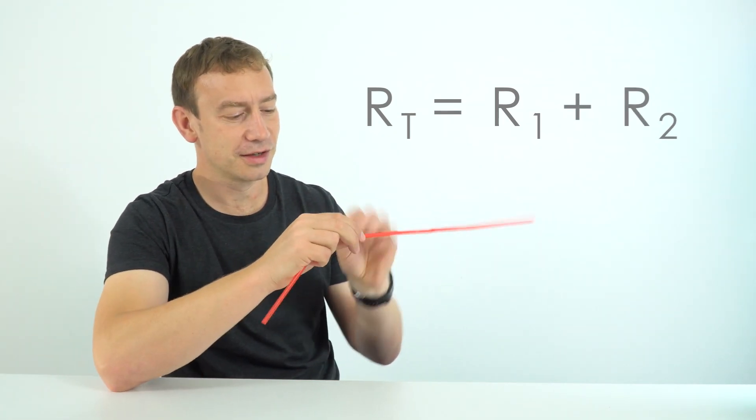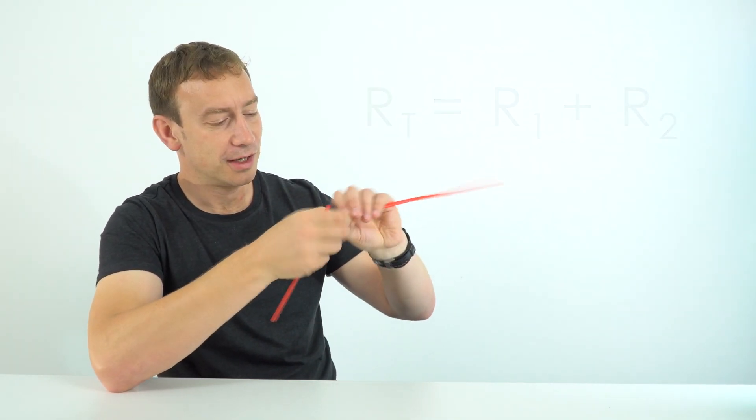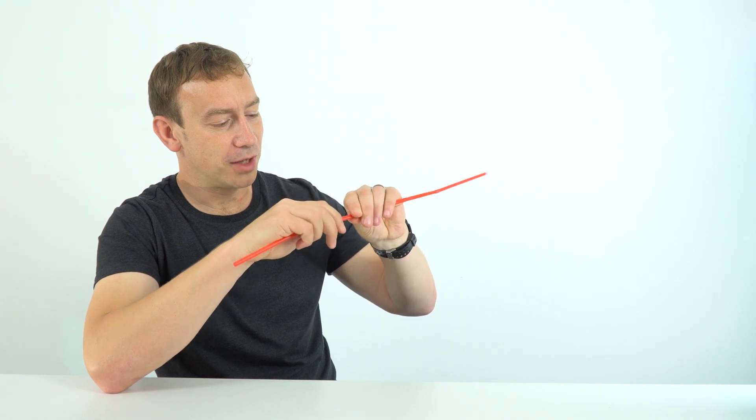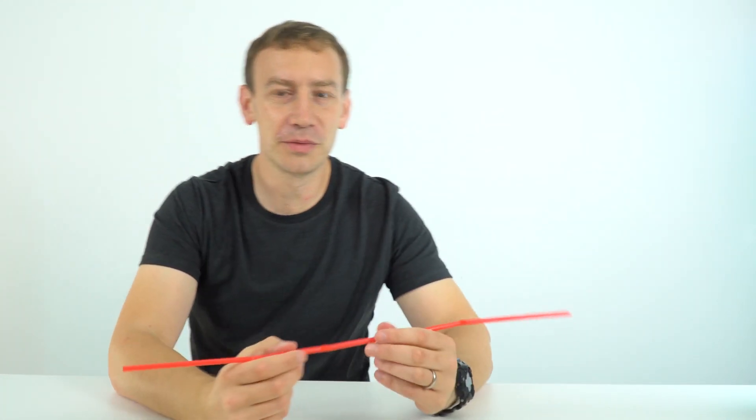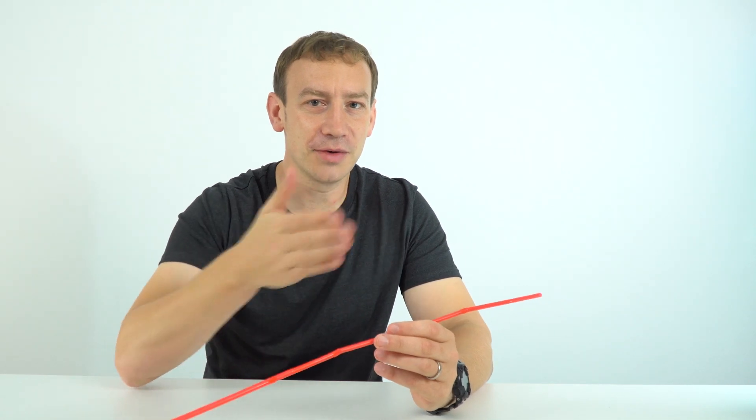If I had a third resistor, again these are all the same value, then what we're doing now is we've got to blow that air through three times as many straws, and that means the resistance has gone up three times compared to what it originally was. So that's what happens with resistors in series. As you add more resistors, their combined resistance increases.